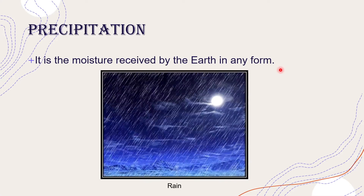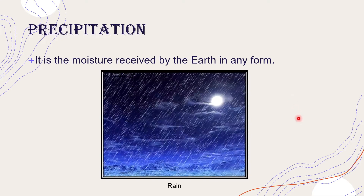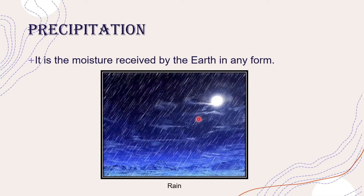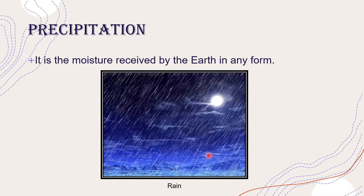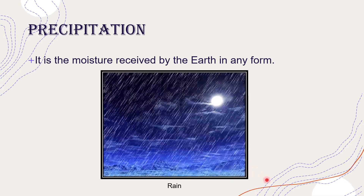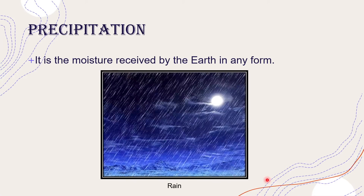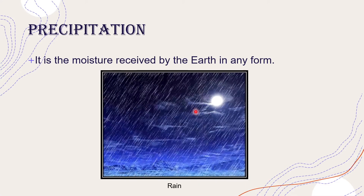So let us now learn what is rainfall. Now we can all see or we all have experienced rainfall. Rainfall is the most common form of precipitation. Large sized water droplets fall from the clouds on the surface of the earth as rainfall.